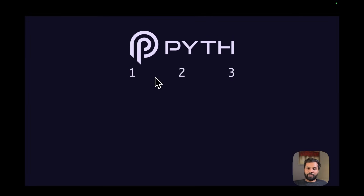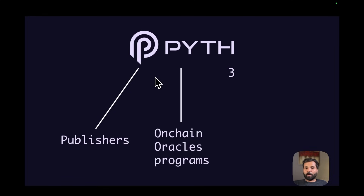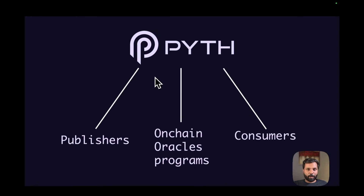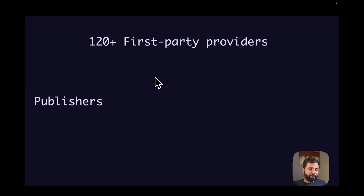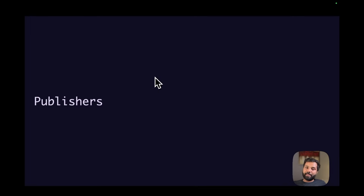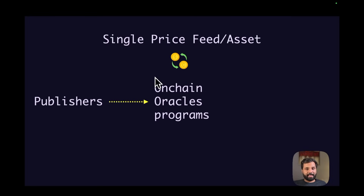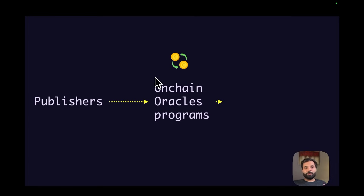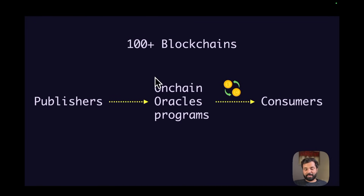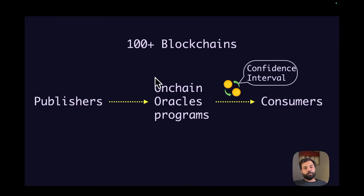The working of the Pyth network majorly depends on three components: first are publishers, second are on-chain programs, and third are consumers who consume this data on-chain. Publishers are 120-plus reputable first-party data providers — these publishers can be exchanges, market makers, etc. Once publishers publish this data to on-chain oracle programs or smart contracts, these programs aggregate and process the data to create a single price feed per asset and then make it available to consumers across 100-plus blockchains.